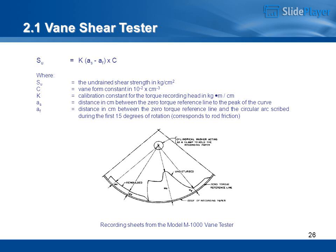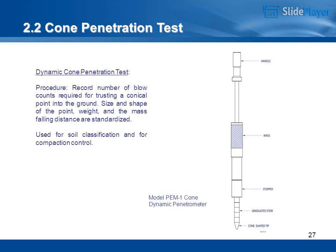Cone Penetration Test — Dynamic Cone Penetration Test procedure: record the number of blow counts required for thrusting a conical point into the ground. The size and shape of the point, weight, and the mass falling distance are standardized. Used for soil classification and compaction control. Model PEM-1 Cone Dynamic Penetrometer.